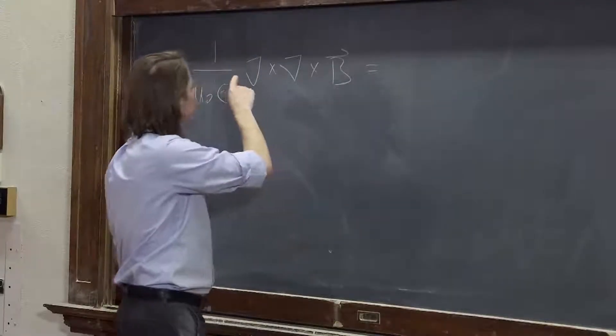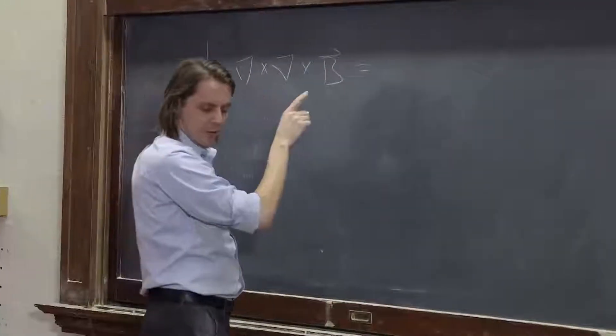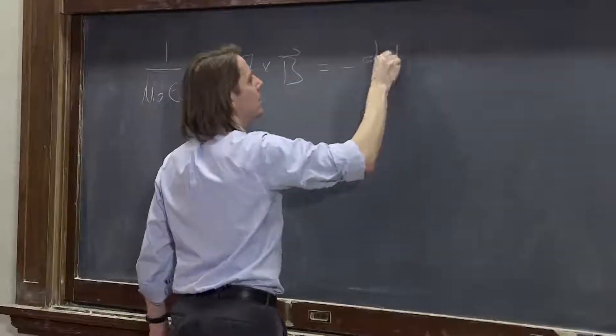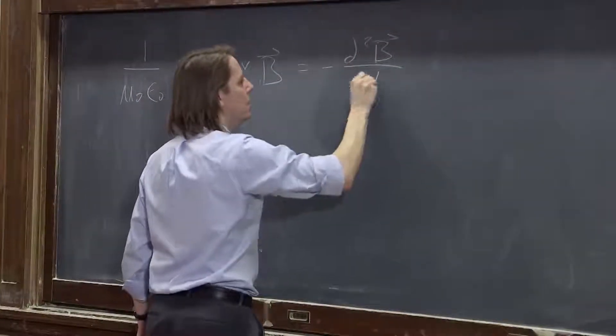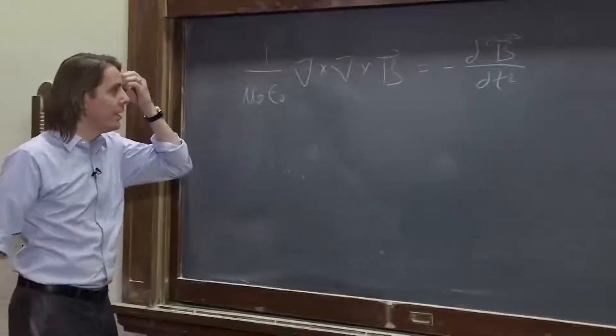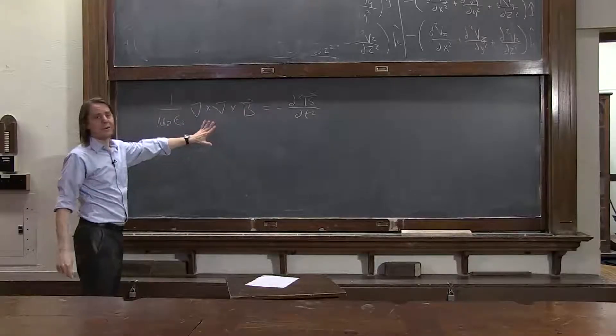To make 1 over mu naught epsilon naught del cross B equals minus d2B dt2. So now we know what this is. And by the way, we did it in Cartesian coordinates.